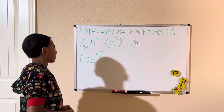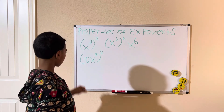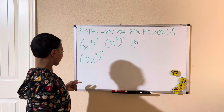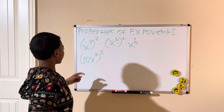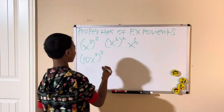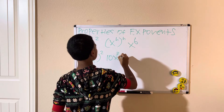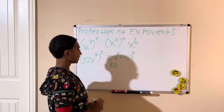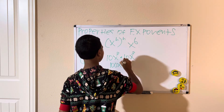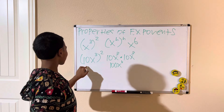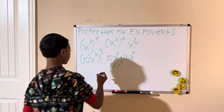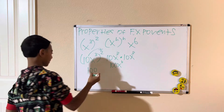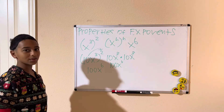Now let's go over 10x cubed squared. Using the first method, we write it out: 10x cubed times 10x cubed, which gives 100 and x to the sixth. So the answer is 100x to the sixth. Using the second method: 10 squared is 100, and x cubed squared means multiply the exponents — 3 times 2 is 6 — giving x to the sixth. Same answer either way.